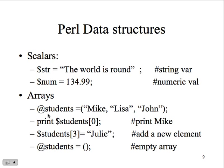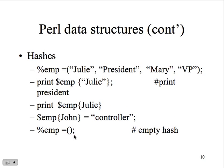For string arrays, here we have students: Mike, Lisa, John. When we print students index zero, it prints out Mike. We use the dollar sign to say it's a scalar variable, and look at student's index value zero - index values start at zero. Student three equals Julia - add a new element. Or set students equal to nothing to clear out the array. Arrays can grow dynamically - they're not set to a fixed size like in C, C++, or Java.